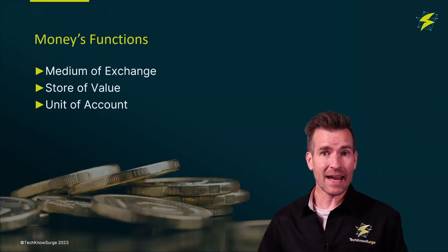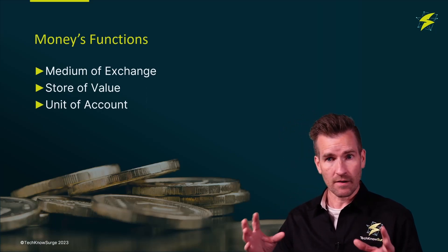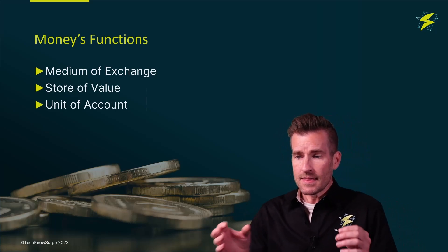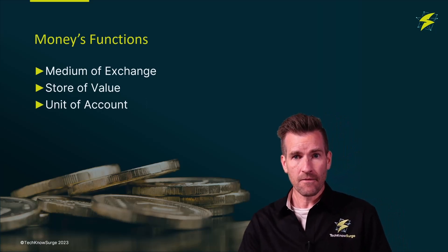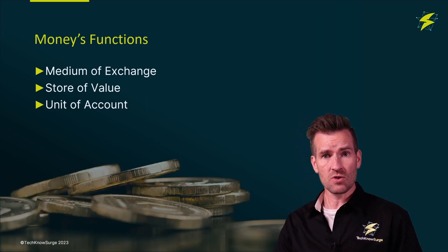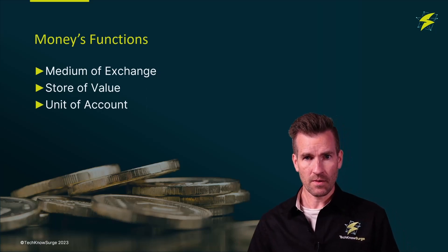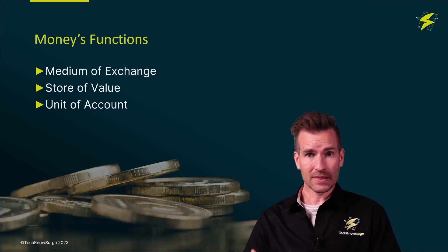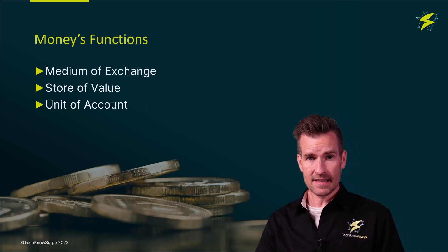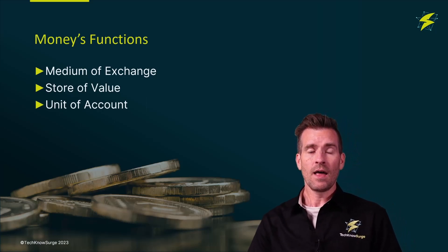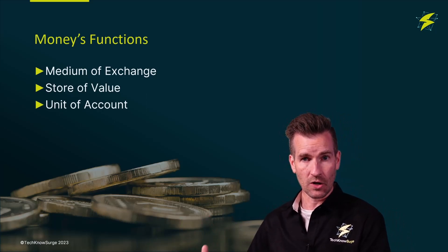Money has three main functions. One of them is medium of exchange, one is store of value, and one is unit of account. The medium of exchange means that I can exchange goods and services for money. Way back when, we just used to exchange services for services, but the problem with that is you may not need the services I'm offering. So we can exchange money instead and use it for other vendors, other goods and services.